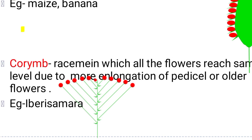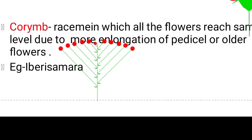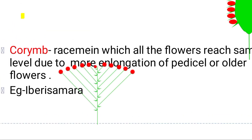Now we have corymb inflorescence. Corymb inflorescence is one in which all the flowers reach the same level due to more elongation of pedicels. The flowers arise from different points on the main axis, and when they reach the same level it is called a corymb. An example is Iberis.